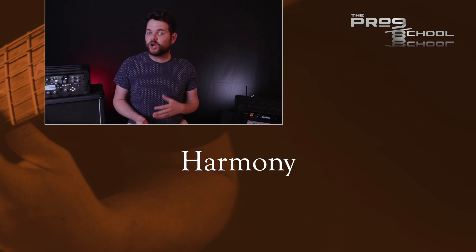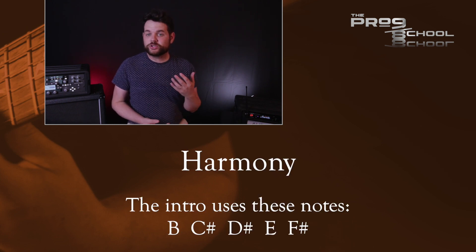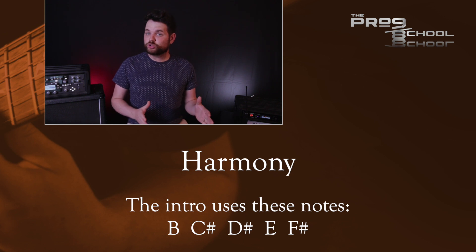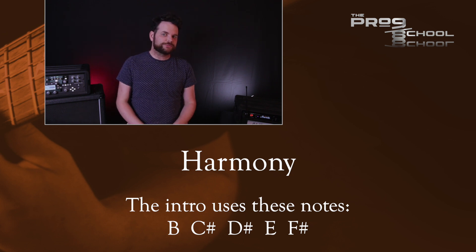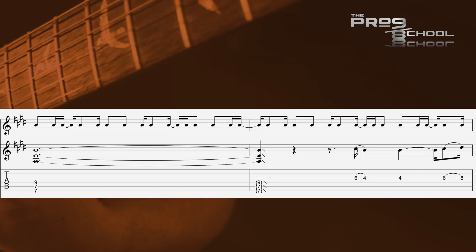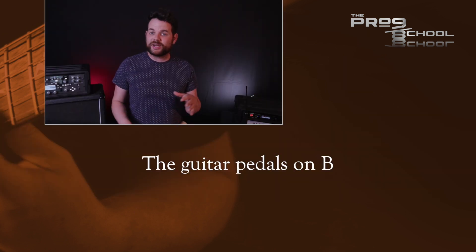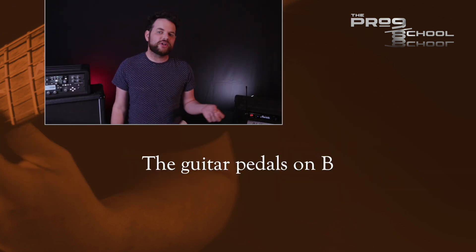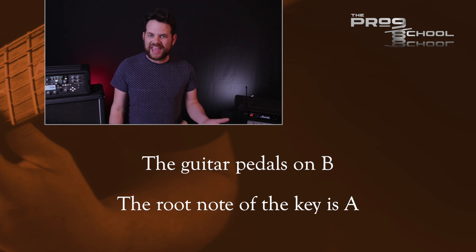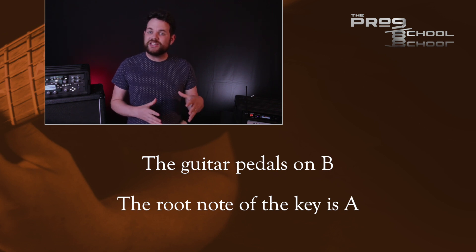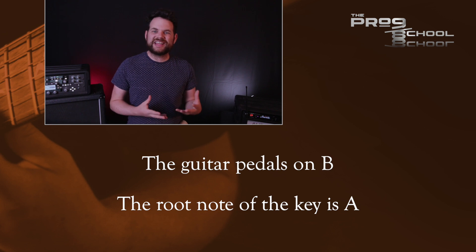The other main thing to talk about is the harmony. I mentioned that the intro guitar used what sounds like a major scale, and that seems true until the rest of the band enters. The guitar is pedaling on the note B, but that's not the root note of the key. The root note is actually an A, which we hear in the rhythm guitar and bass. So this B note in the ostinato is actually the 9th of the key.